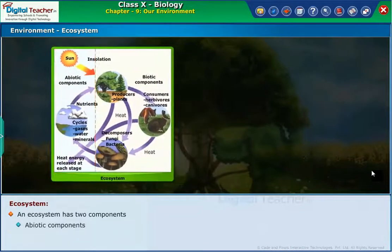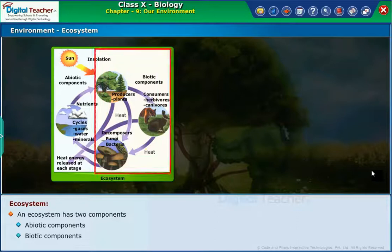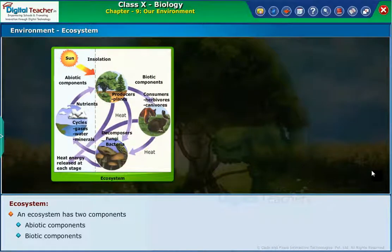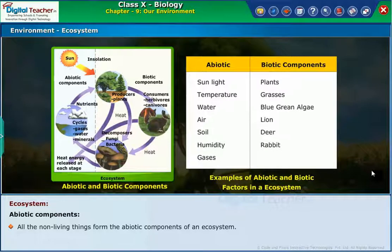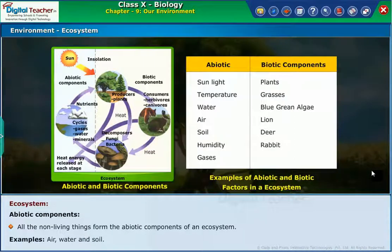Let us learn about these components in detail with examples. Abiotic components: all the non-living things form the abiotic components of an ecosystem. Examples include air, water, and soil.